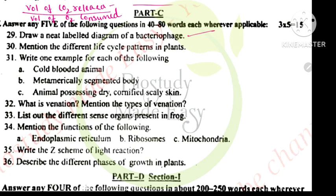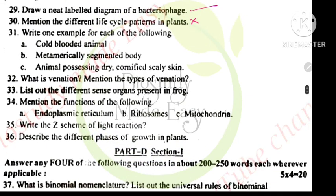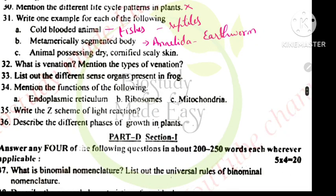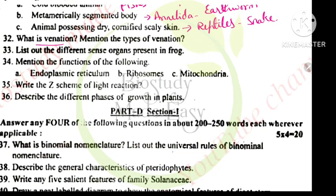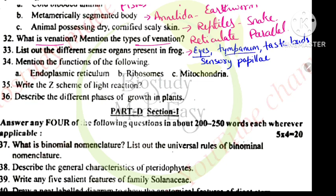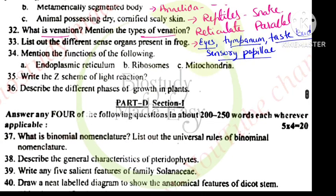Bacteriophage diagram. Life cycle patterns in plants, actually this is deleted portion after angiosperms. Example of cold-blooded animal: fish, reptiles. Metamerically segmented body, annelids, for example earthworm. Animals possessing dry cornified skin, reptiles, so snakes, crocodiles, any reptiles. Venation is arrangement of veins and veinlets on leaf lamina. Types of venation: reticulate venation, parallel venation. Sense organs present in frog: eyes, tympanum, taste buds, sensory papilla that is for touch, nasal epithelium for smell.